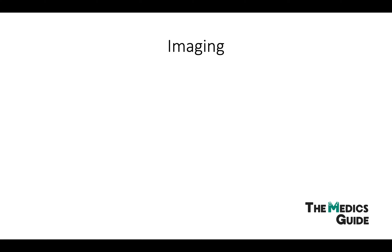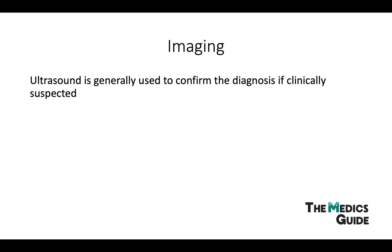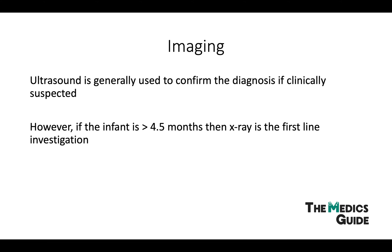Moving on to imaging, ultrasound is generally used to confirm the diagnosis. X-rays aren't ideal because in the newborn, the femoral head and acetabulum are largely cartilaginous. Ultrasound is the investigation of choice for DDH in infants younger than four and a half months, and is especially useful when examination findings are subtle. If the infant is greater than four and a half months, we can do an x-ray, as the dislocation becomes more visible. Before interpreting these x-rays, it's worth familiarizing yourself with child x-rays to get used to the landmarks.